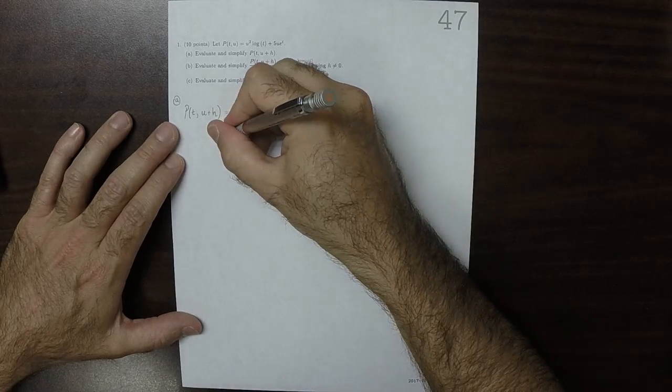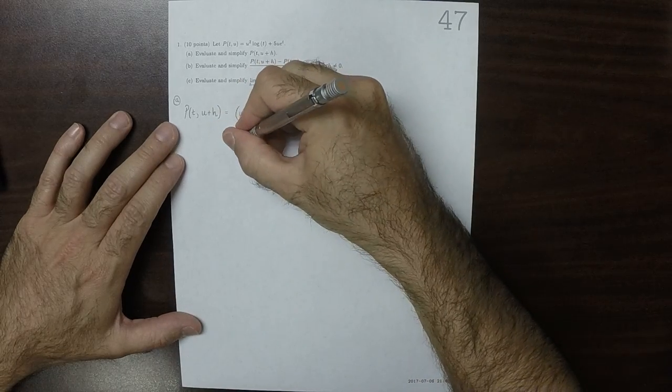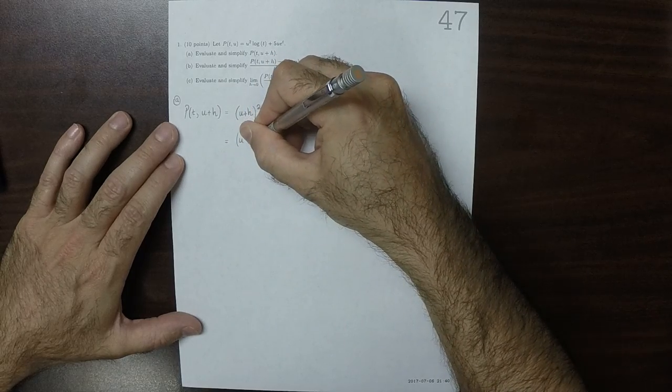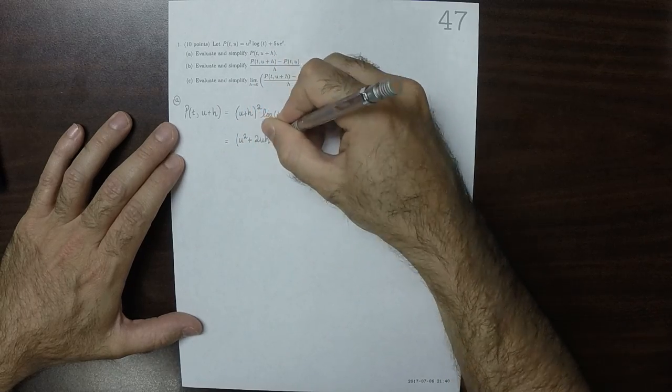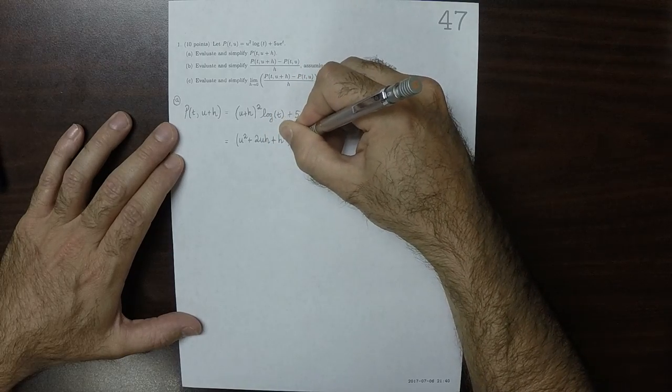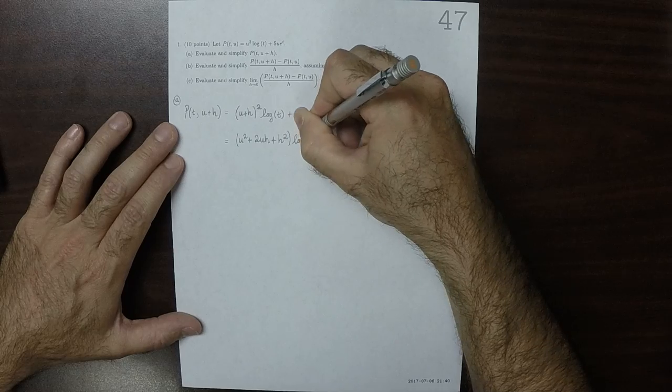And then multiplying it out, that is u squared plus 2uh plus h squared times log of t.